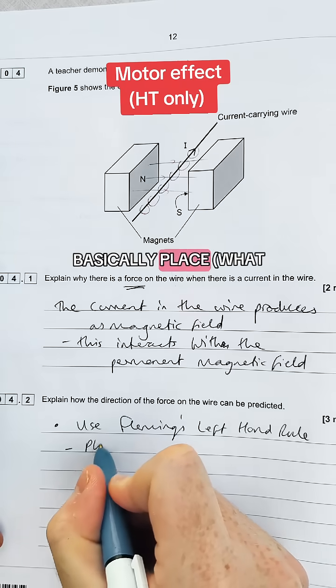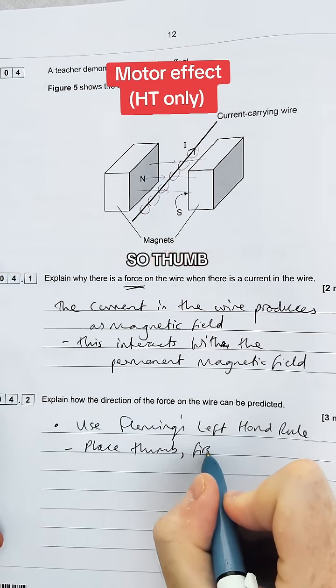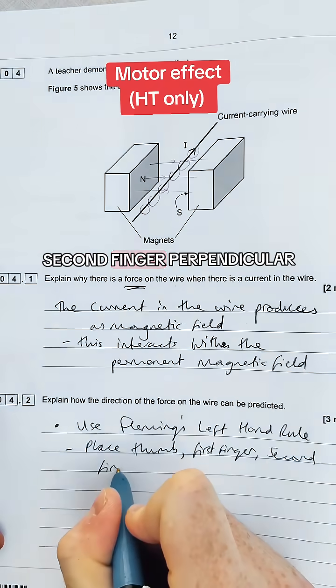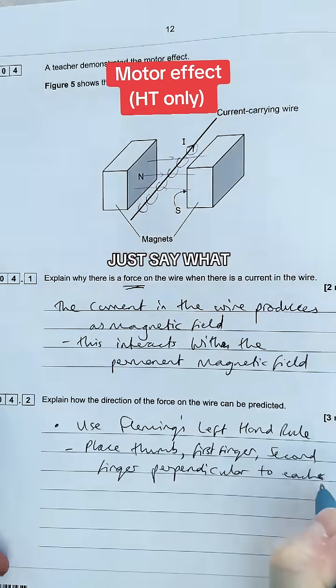So we'd say basically place what I've just done essentially. So thumb, first finger and second finger perpendicular to each other or right angles to each other and then you just say what each one represents.